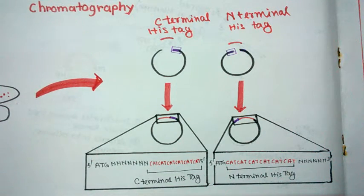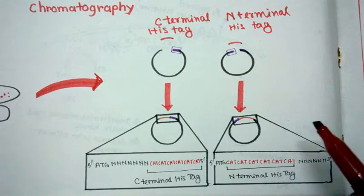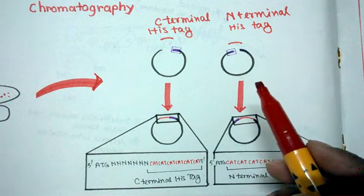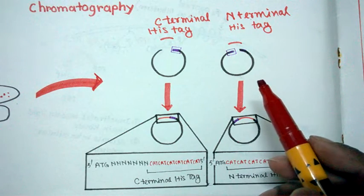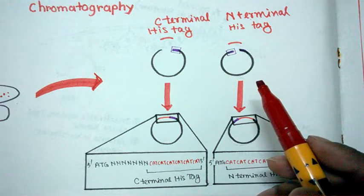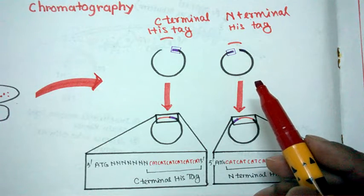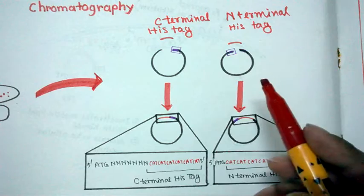And after cloning these things, what we would do, we would transform our bacteria with these expression vectors which contain our gene of interest. Now the bacteria would produce the protein and we have to purify the protein and we would see how this whole affinity chromatography works.